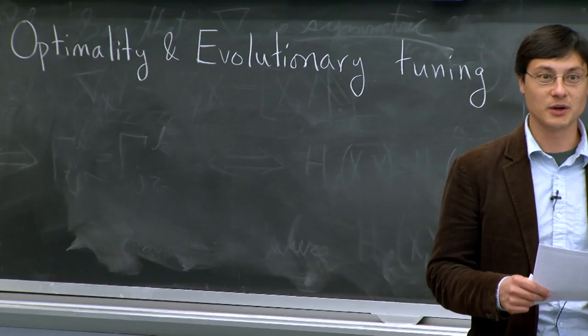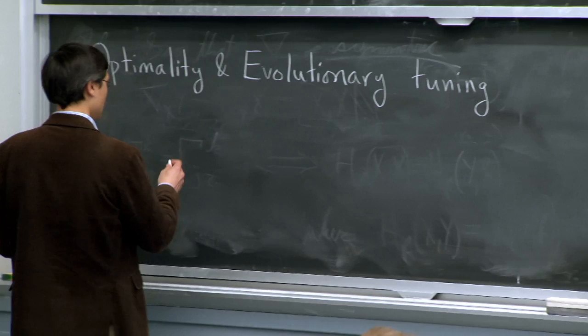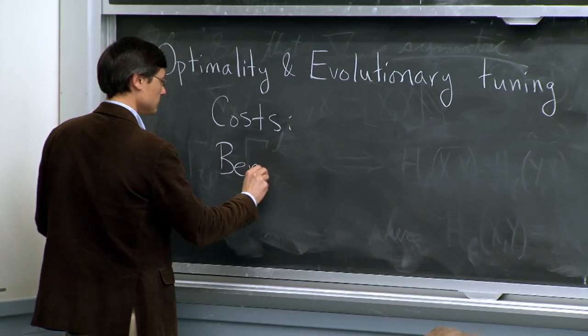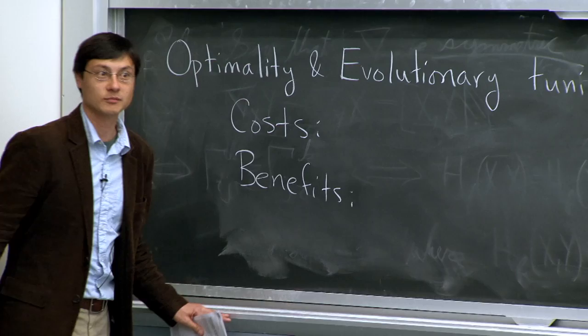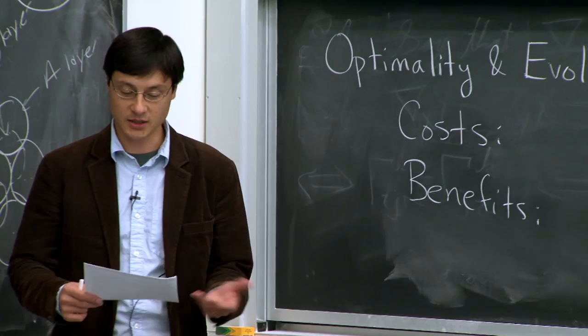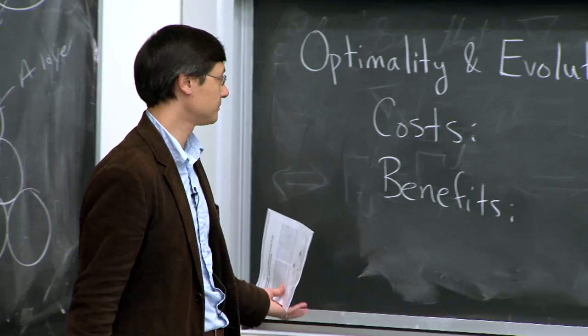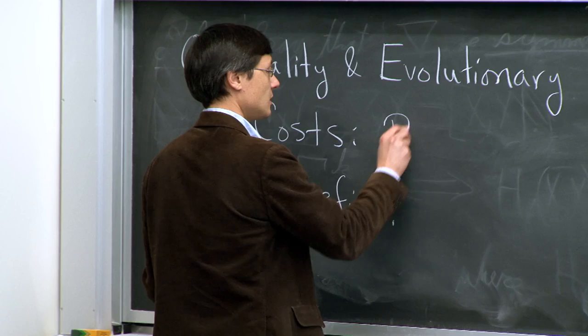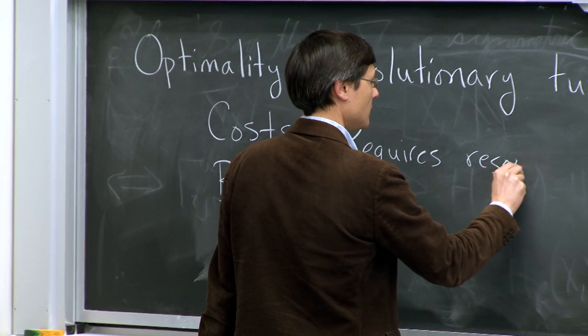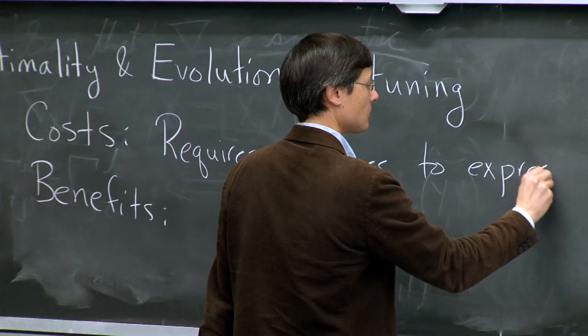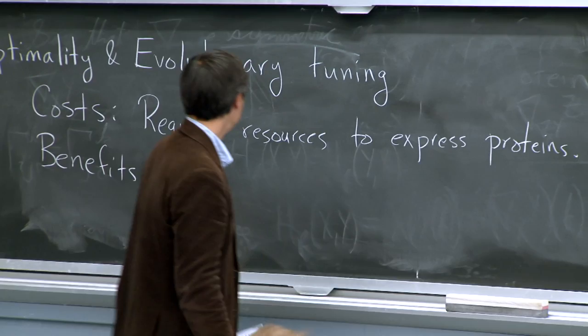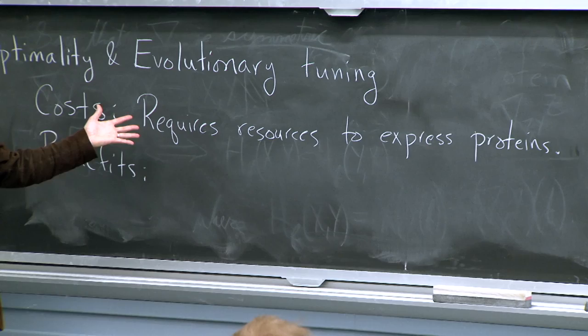Let's first make sure we understand what we mean by costs and benefits in this case. What is a cost and benefit in the context of this paper? Protein requires resources of some sort or another to express. If you were not making these proteins, you could have been making other proteins. There is some finite number of things the cell can do.